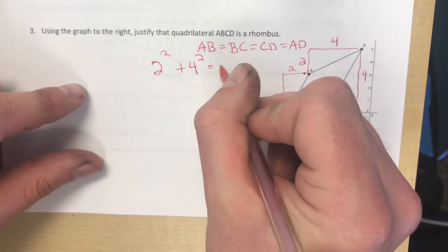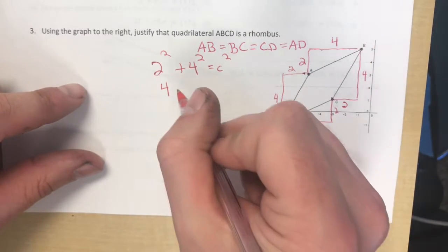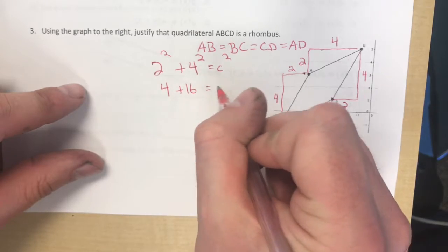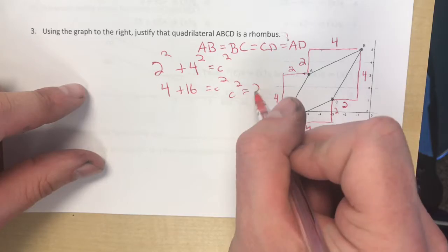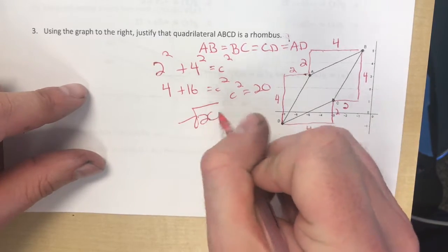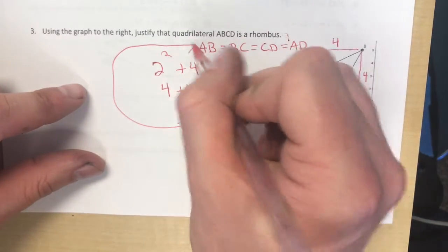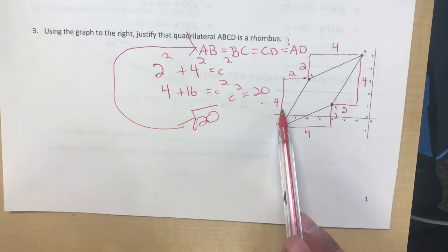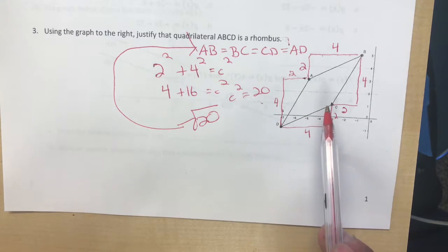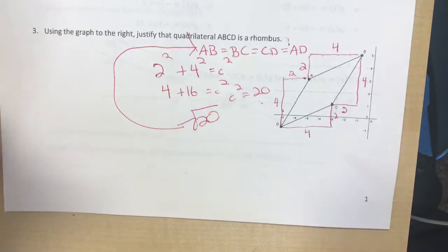So 2 squared plus 4 squared is c squared. So basically all of these distances are going to be the square root of 20. And these triangles show me, now if one of them had been different, I would have to go back and rework it, but since it's not, that is good enough for number three. Okay, turn it over.